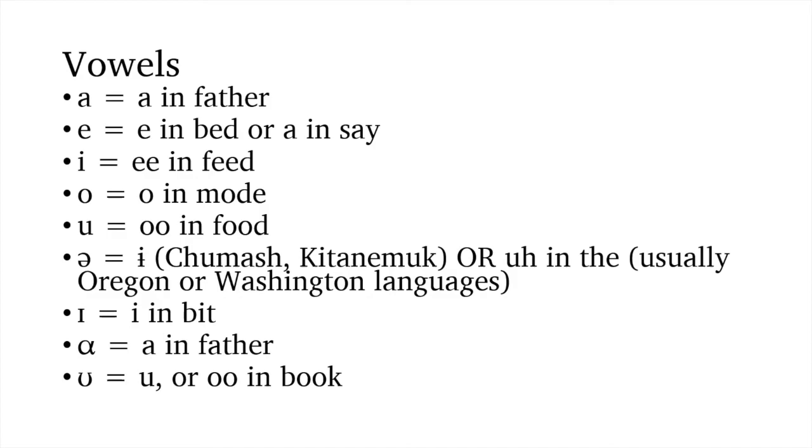And now, we have this little I. I don't really know how to describe it. But it just doesn't have the dot on, like, a lowercase i. But, this usually means that it's the I in bit. I in bit. And this usually shows up in Oregon or Washington languages, not California. And we have an alpha. Alpha is kind of like the same thing as the A in father. So, that also usually shows up in Washington. And the upsilon, kind of looks like a horseshoe, is like the U in book. And usually today, that's written as a U.